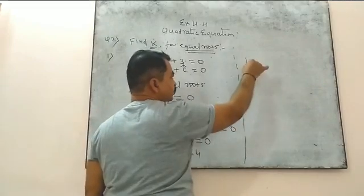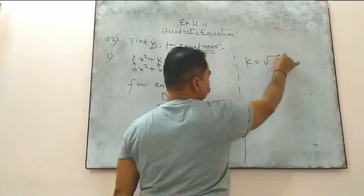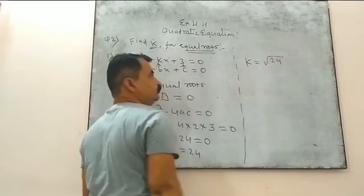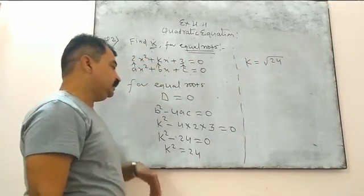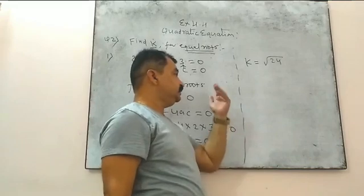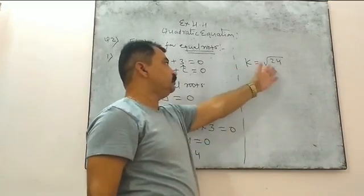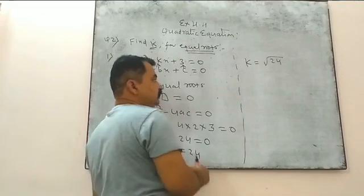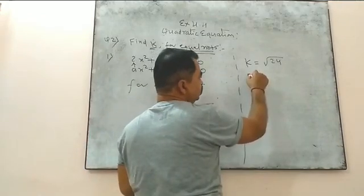K equals what do we get here? Under root 24. When we remove the square from the left side, we get square root on the right side. Or, you can get this idea by taking the square root on both sides. Square root and square cancel here, and you will get square root on this side.